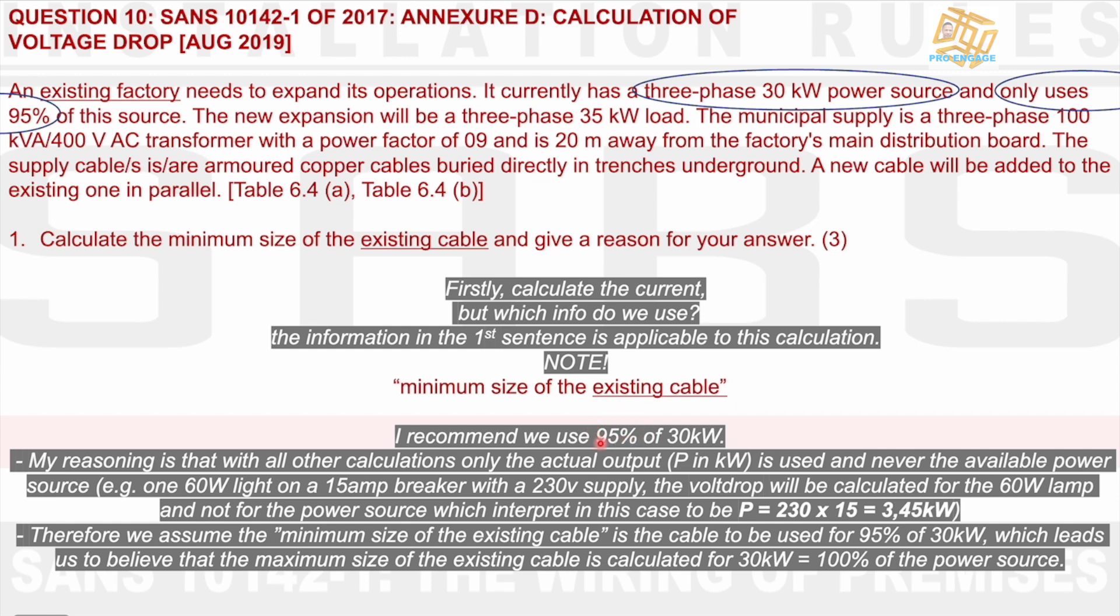That means and interprets to me that 95% of 30 kW is the actual load drawn. So therefore I would lean towards using 95% of that. You know, the answer is something else. So let's see where my reasoning takes us. Therefore we assume the minimum size of the existing cable is the cable to be used for 95%. The minimum size of the existing cable is to be used. Let's go on, which leads to us to believe that the maximum size of the existing cable is calculated for 30 kW, which is equal to 100% of the power source. But they're not asking us for the maximum. The maximum would be 30 kW that we're going to use. The minimum is 95% of 30 kW. All right, let's see. Let's move forward.